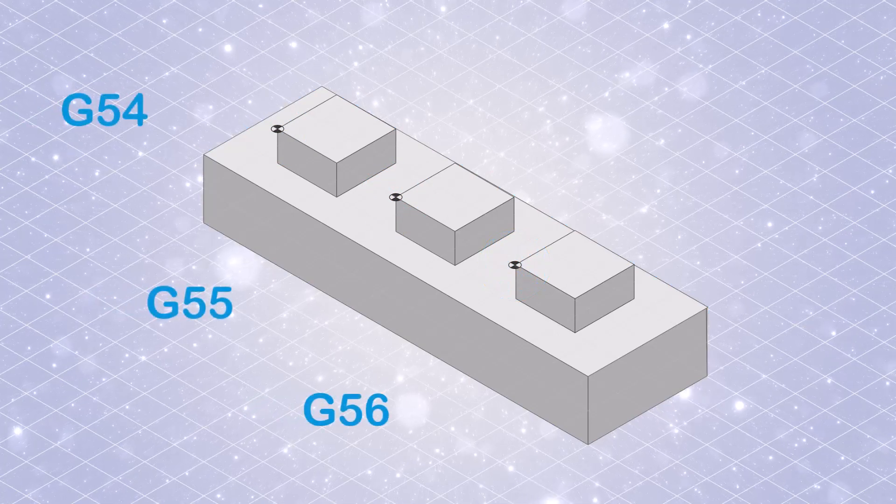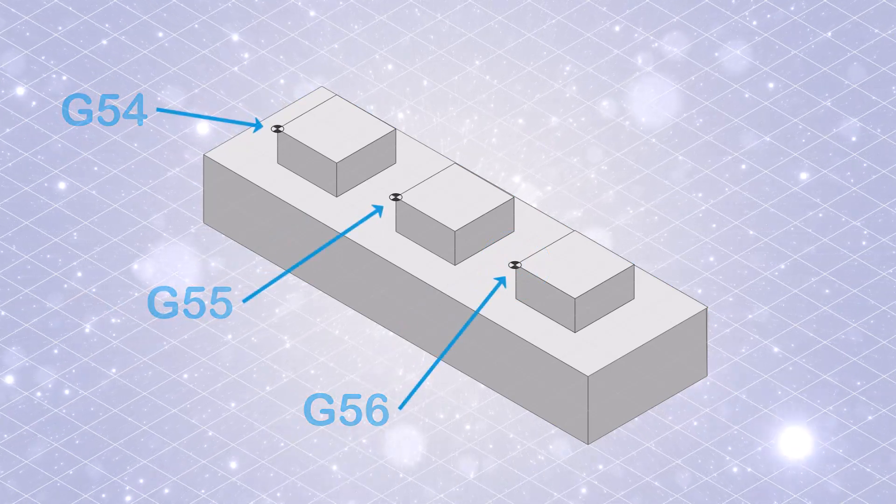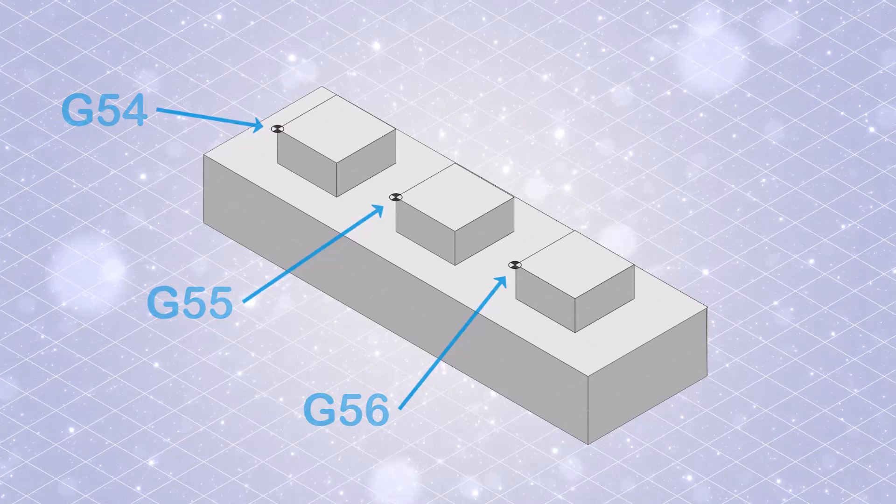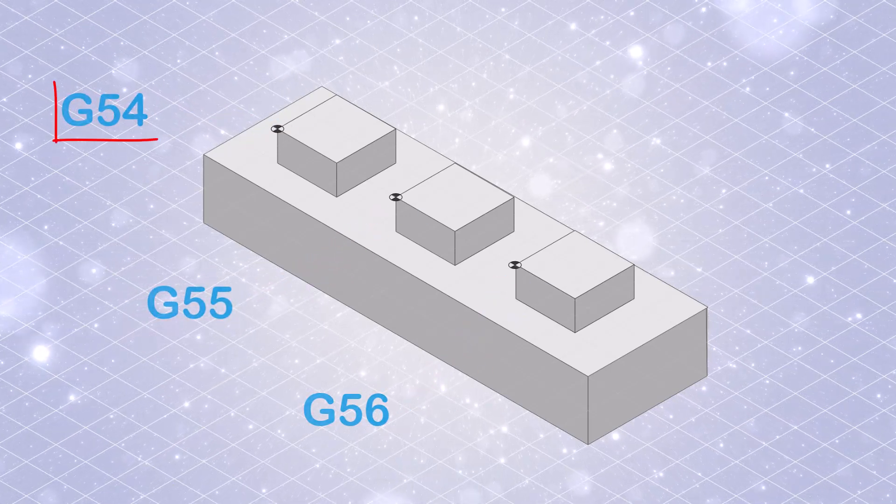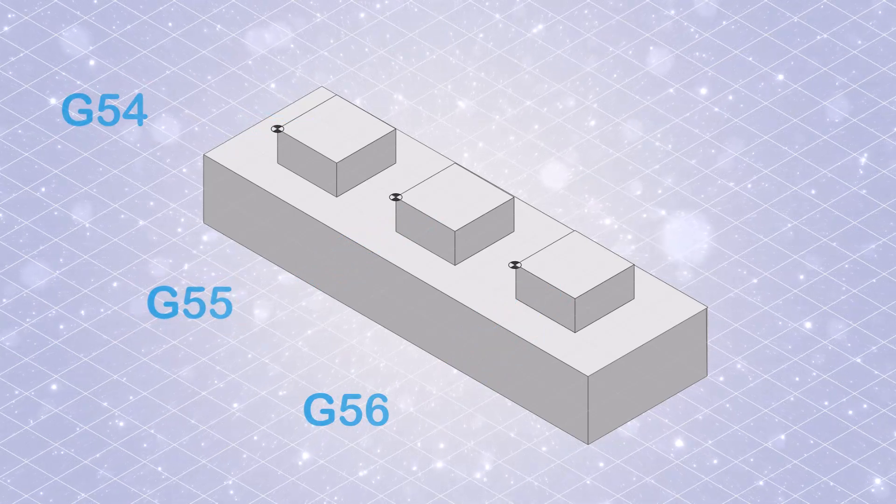Now, on to the G-codes. G-54 to G-59 are used to select different work offsets. Each code corresponds to a specific offset, with G-54 as the first, G-55 as the second, and so on, up to G-59.